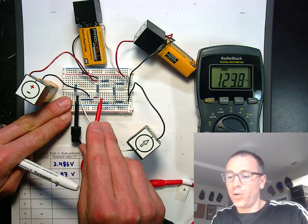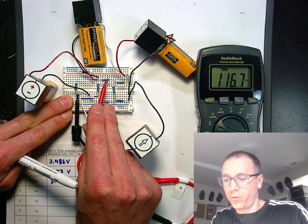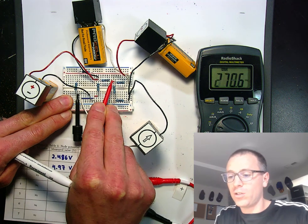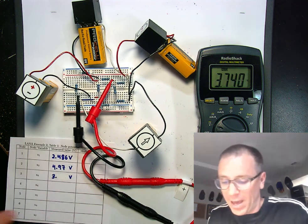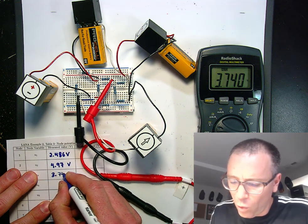Okay, now we're going to move on to node 3, which is in between the resistor 4 and resistor 7. Here we see that that is approximately 3.740.